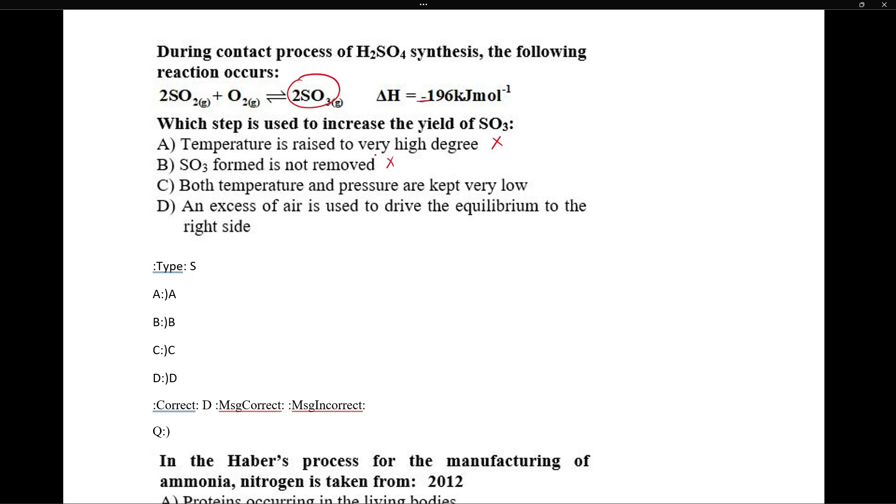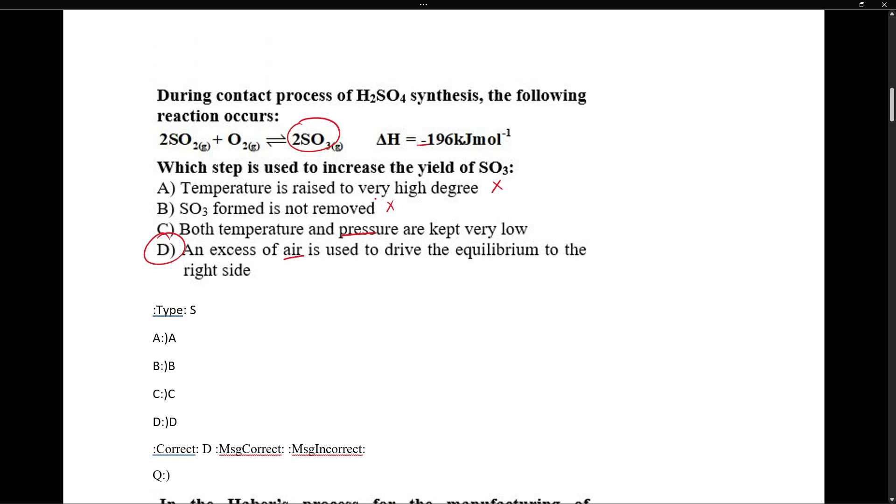Both temperature and pressure are kept very low? When you decrease temperature, the reaction will move forward. But decreasing pressure will make the reaction move backward. Excess air is used - air contains oxygen gas. So when you increase oxygen, when you increase reactant, the reaction will move in the forward direction.